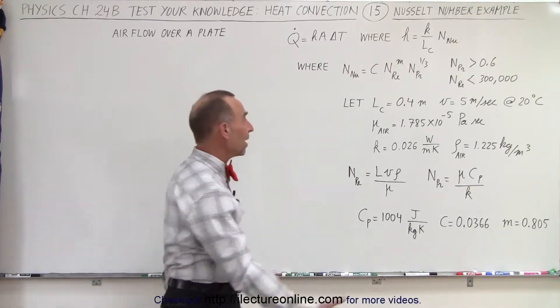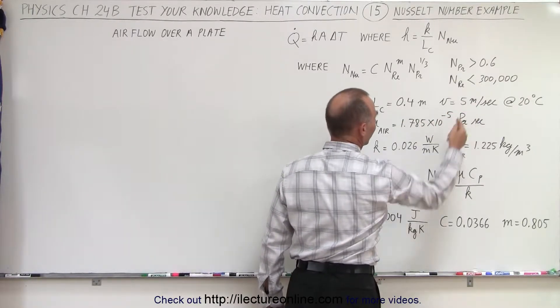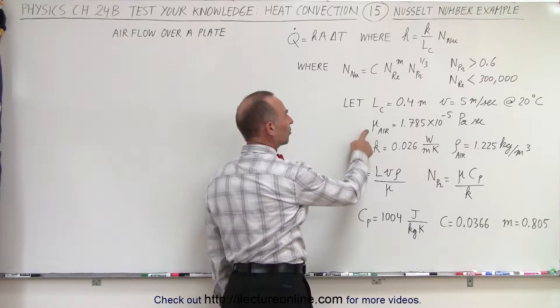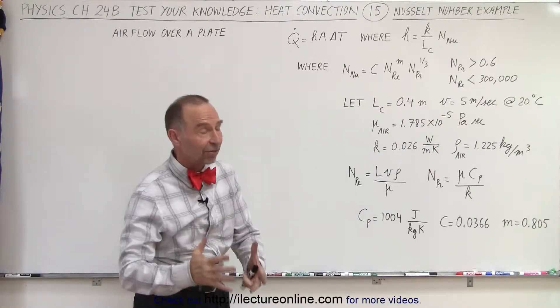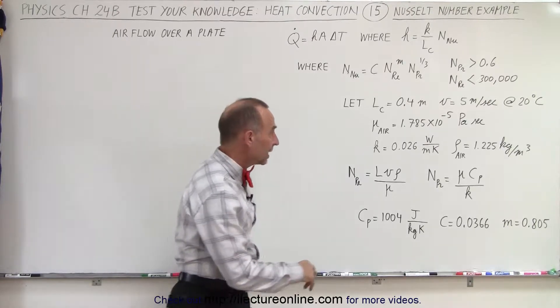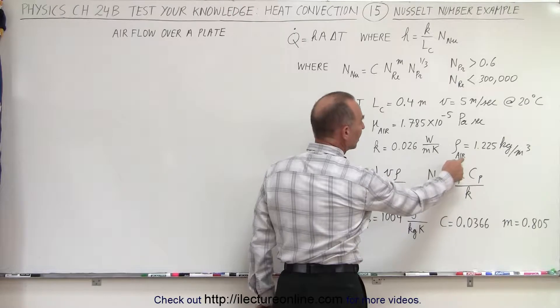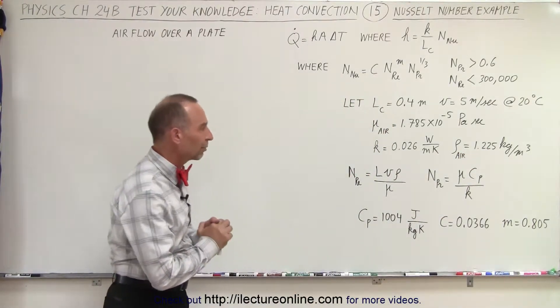For some specific values, characteristic length of 0.4, the velocity of the fluid is 5 meters per second at 20 degrees centigrade. That gives us viscosity for the air of about 1.785 times 10 to the minus 5 Pascal times seconds. The heat conductivity of air is 0.026, and the density of air at room temperature is about 1.225 kilograms per cubic meter.